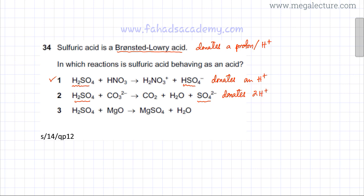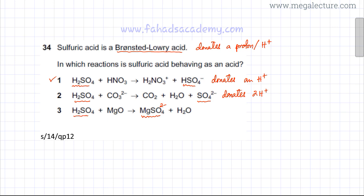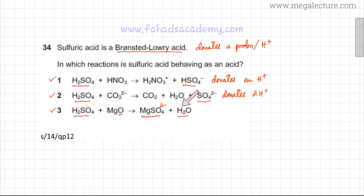In the third option, we again start with H₂SO₄, and on the other side we have SO₄²⁻. The salt MgSO₄ contains the SO₄²⁻ ion, meaning it lost H⁺ ions. Those H⁺ ions combined with oxygen to form water — a typical acid-base reaction. Starting with H₂SO₄ and ending with MgSO₄, it lost 2 H⁺ ions along the way, acting as an acid.